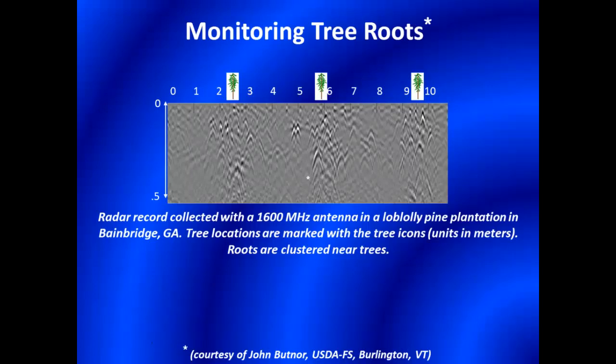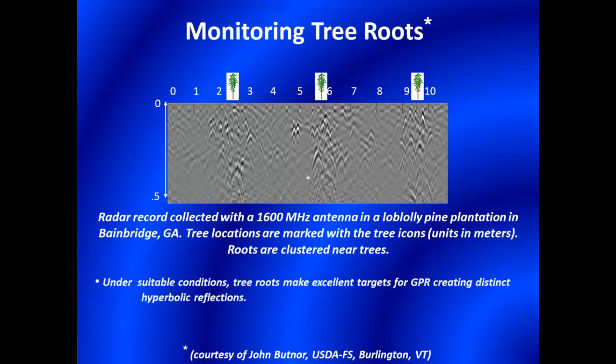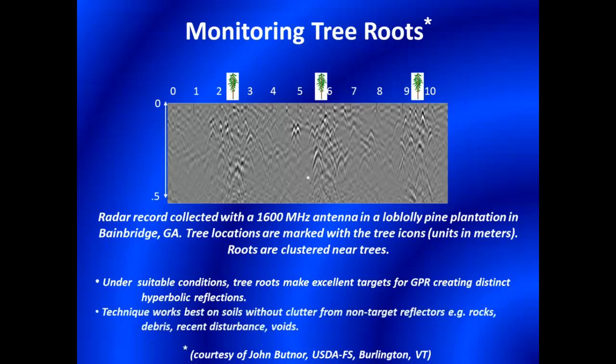Ground-penetrating radar has been used to detect roots and buried organic debris, assess root size, map root distributions, and estimate root biomass. Being non-invasive and non-destructive, GPR allows repeated measurements that facilitate the study of root systems. In this example, roots as small as half a centimeter in diameter are detected at depths of less than 30 centimeters with a high frequency antenna in a well-drained sandy soil. However, root detection is ineffective in soils with high clay, water, and/or rock fragment contents.